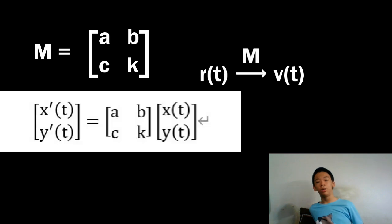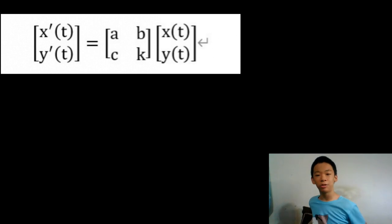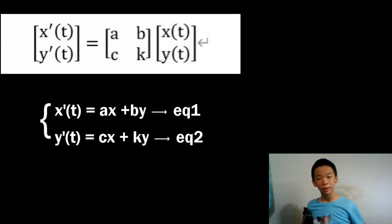it gives you the velocity. We can write this as x prime of t, y prime of t equals the matrix a, b, c, k acting on the position vector x of t, y of t. We can use properties of matrix multiplication and explain this like so. We get x of t equals ax plus by and y prime of t equals cx plus ky.